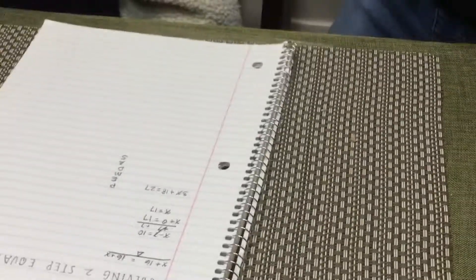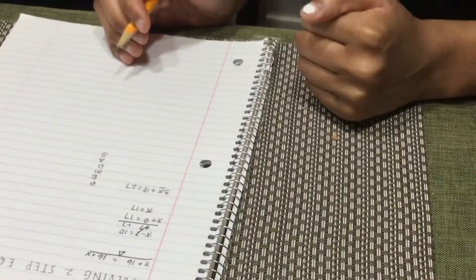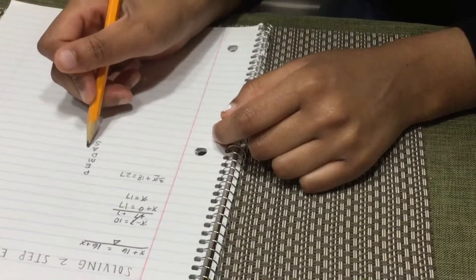So remember, PEMDAS stands for parentheses, exponents, multiplication and division, and addition and subtraction. So whenever we're trying to solve that x and isolate it, we're going to do exactly everything in the opposite direction. So what's the first thing that we have to do? Add and subtract.